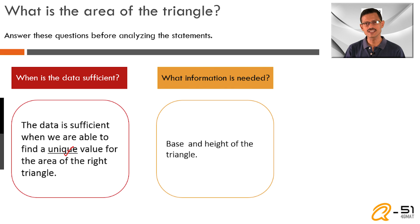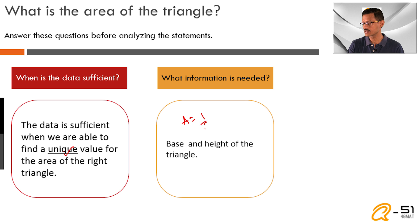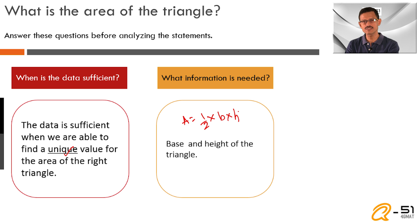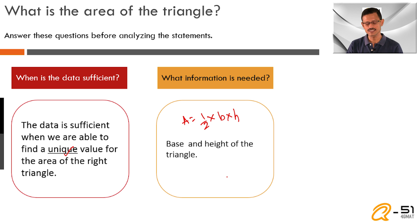What do we need to get this answer? Typically, the area of a triangle — the formula is area equals half times base times height. So if I'm able to get the base and height of the triangle somehow, I will be able to find out the area of the triangle. The information needed is possibly the base and height of the triangle.